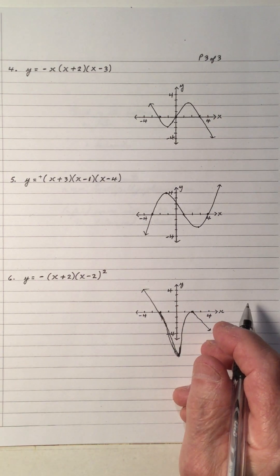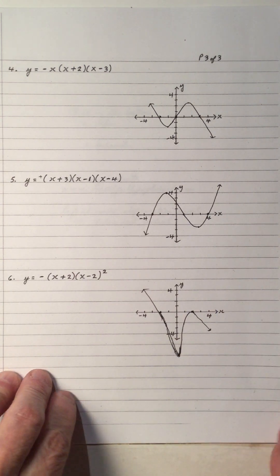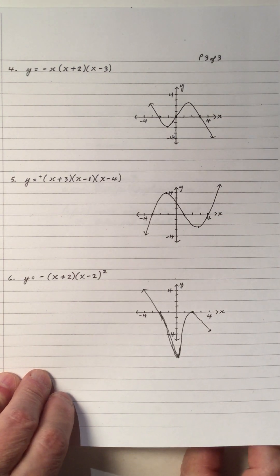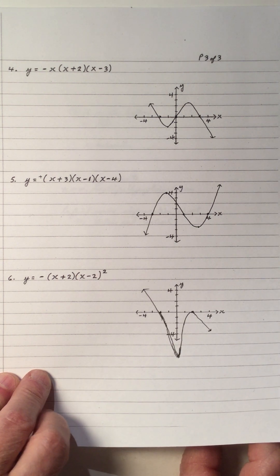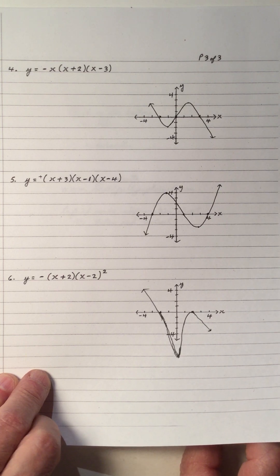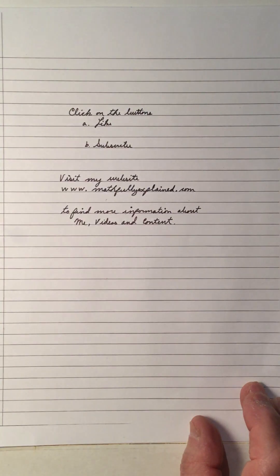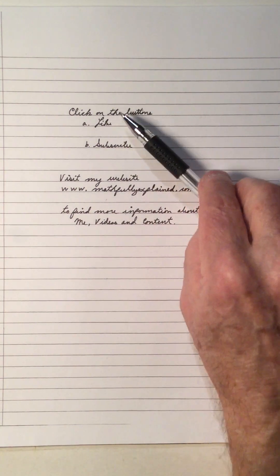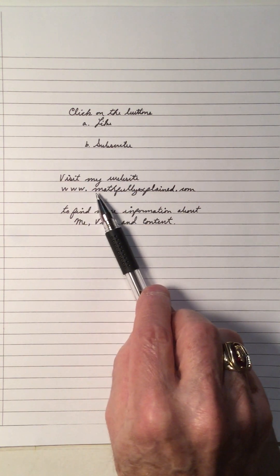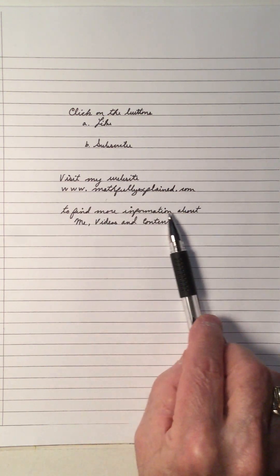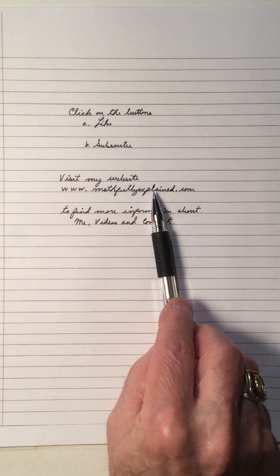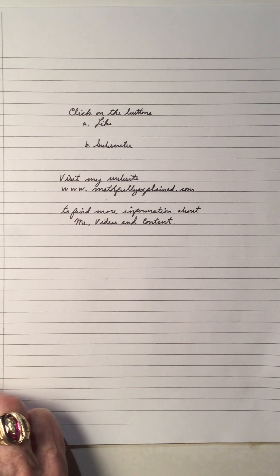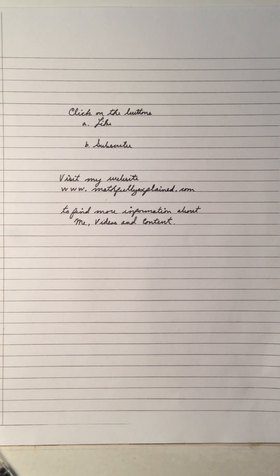That's a review of the cubic polynomial we're going to deal with in the next few videos. By taking the first derivative and setting it equal to 0, we find the values of x where the slope of the tangent is 0. If you like my video, click the like and subscribe buttons. Visit my math website at www.mathfullyexplained.com for more information. Thank you for viewing — hope the video helped you.